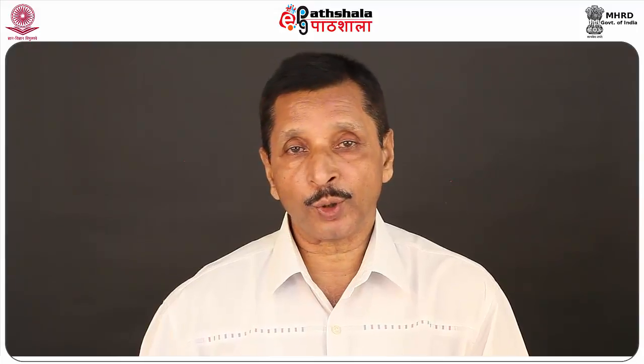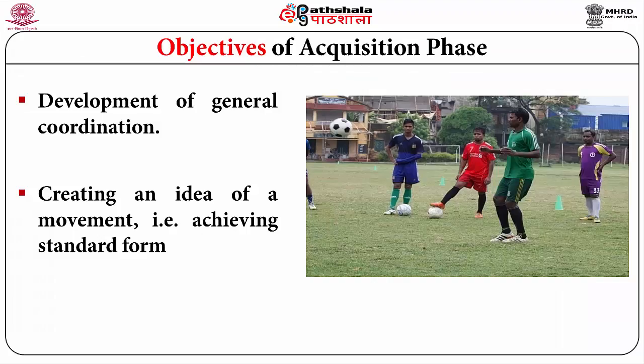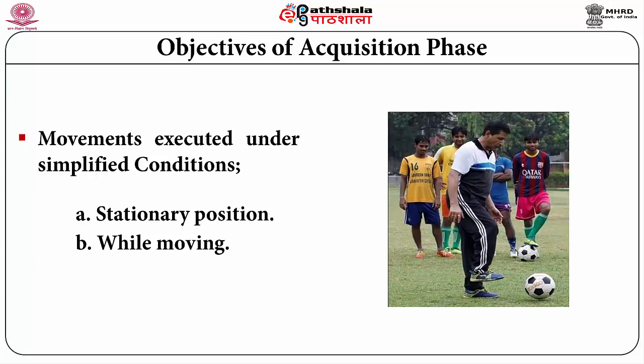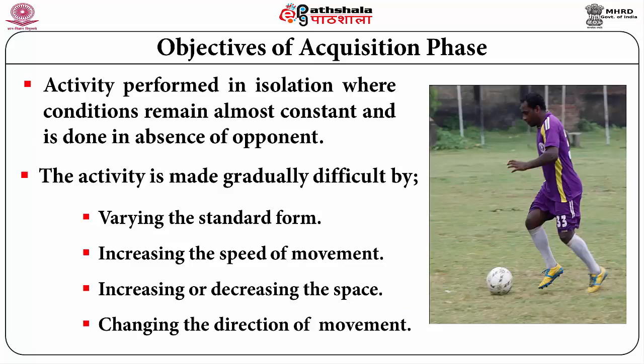Rewards and successes are proved to be very effective at this stage. Since the players are not having well-developed coordination, effort must be made to develop this coordination, which reflects in the quality of the technique. The objective of this phase is creating an idea of a movement — achieving a standard form. Movements are executed under simplified conditions, first stationary and then moving, in isolation, with conditions almost constant and in the absence of an opponent.